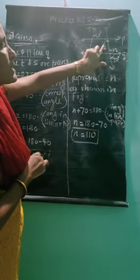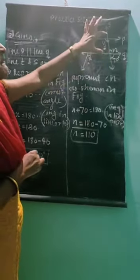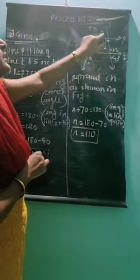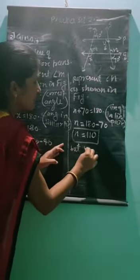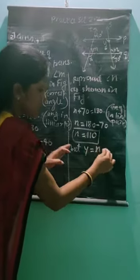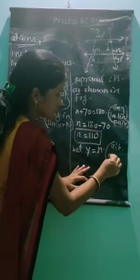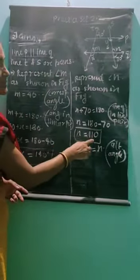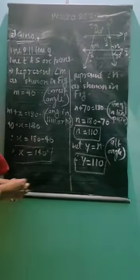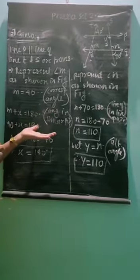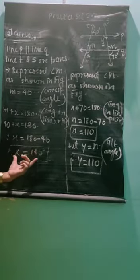Looking at the relation between Y and N, both are alternate angles. When two parallel lines and one transversal are given, alternate angles are congruent. So Y equals N — reason: alternate angles. Since N equals 110, therefore Y is also equal to 110. In this way, by using the properties of angles formed when two parallel lines and one transversal are given, we find the values of X and Y.